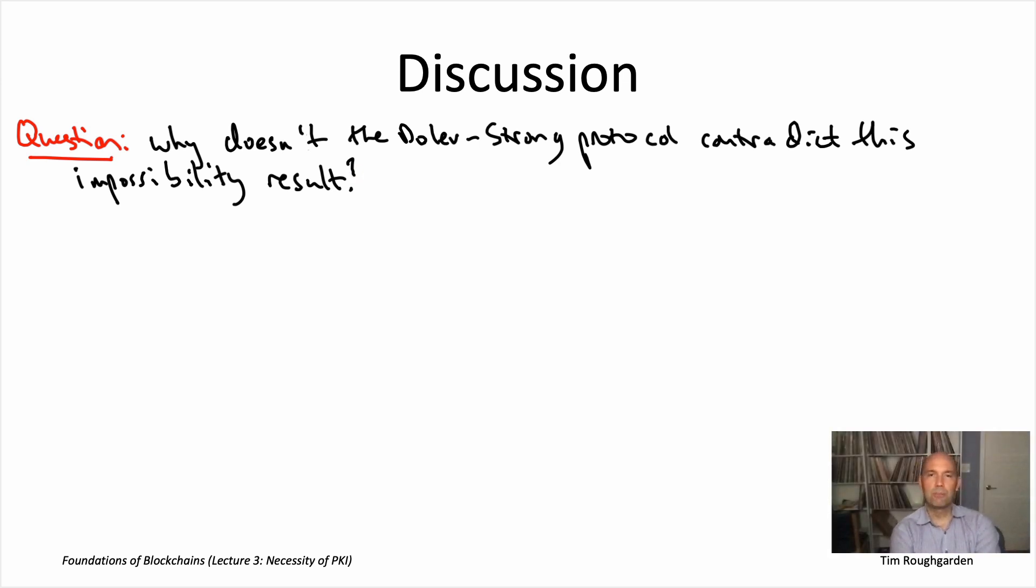So this public key infrastructure assumption was one of the four assumptions we made when we did the validity and agreement arguments for the Dolev-Strong protocol. And so remember, we're not just assuming that cryptography exists, in the sense of secure digital signature schemes, and that every node is capable of generating a public-private key pair for itself. With the PKI assumption, you're also assuming that somehow, in a trusted setup phase that occurred before the protocol ever started, somehow every node learned the public key of every other node.